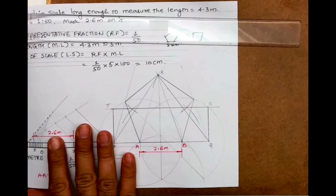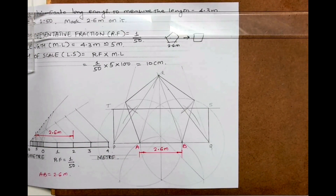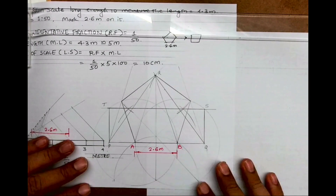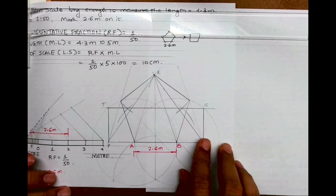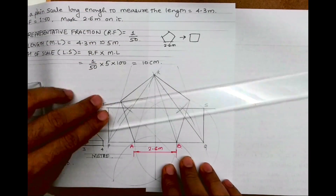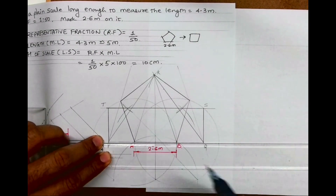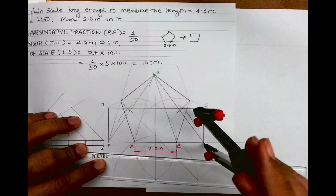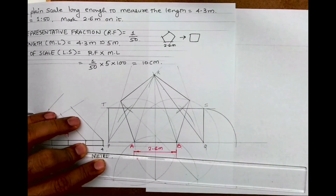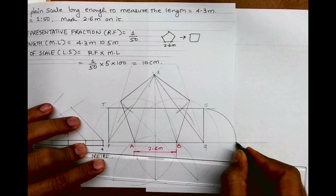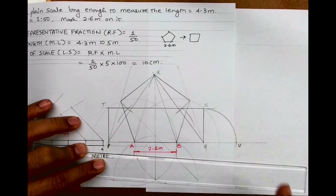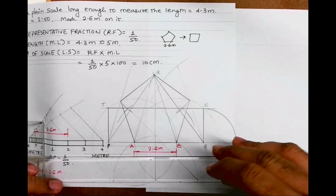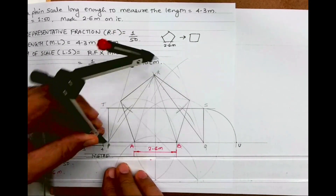Now we need to convert rectangle PQST into a square. I'll extend the base, take Q to S and rotate it to get point U. This gives line PU. I bisect PU into two parts — you can cut above or below; I won't do that here due to space. Bisect PU to find the center point O.